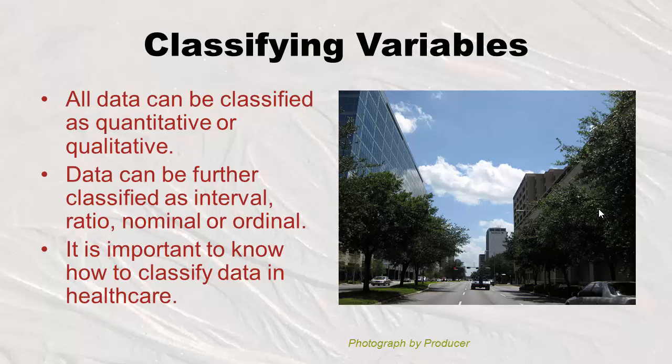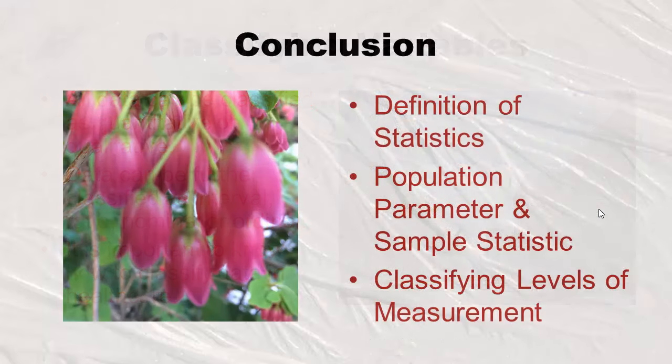All data can be classified as quantitative or qualitative — that's the first split you make. Once you do that, you can further classify as interval, ratio, nominal, or ordinal. It's really important to know how to classify data in healthcare, because depending on how you classify it, you can do different things with it in statistics. We went over the definition of statistics, population parameters and sample statistics, and classifying variables into levels of measurement. I hope you enjoyed the lecture.